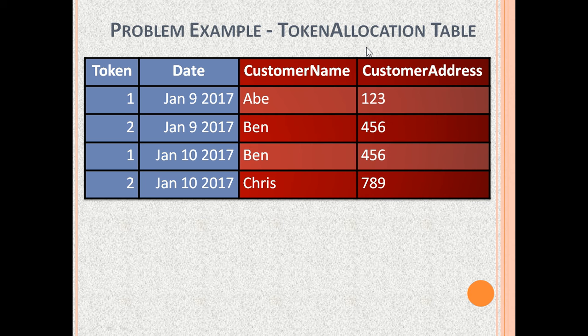For example, a bank branch, hospital, outpatient department, or any customer care center where people wait for their turn to be seen. The tokens always start from 1 every morning.